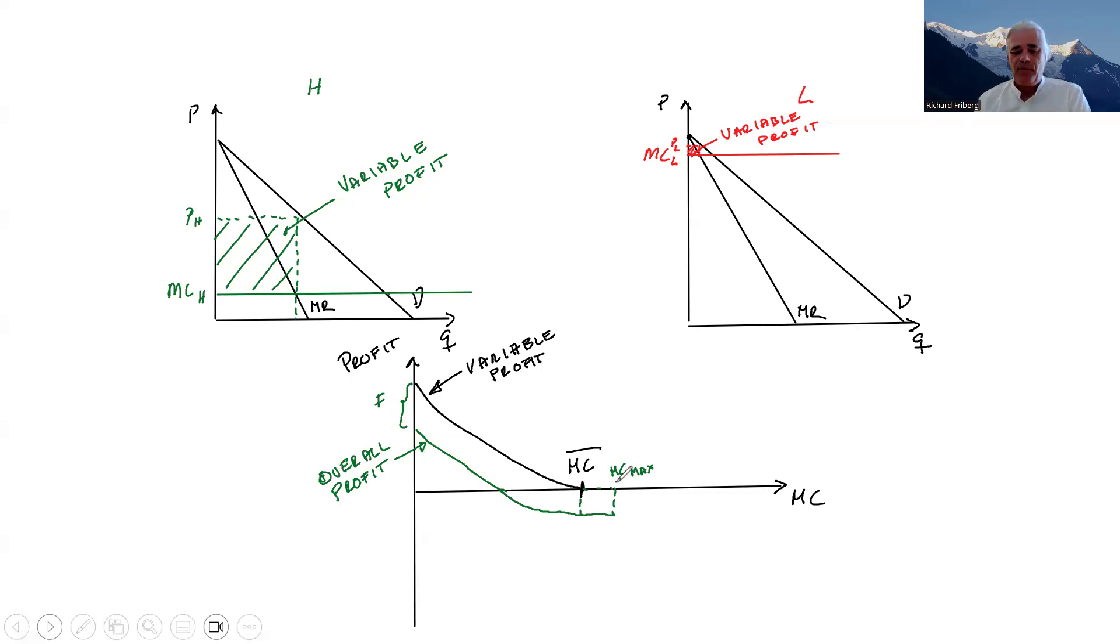So when the firm is making this investment, deciding whether to take the fixed cost, it says, well, if I get a low marginal cost draw, I'm going to be making a surplus. I'm going to be making a profit here.